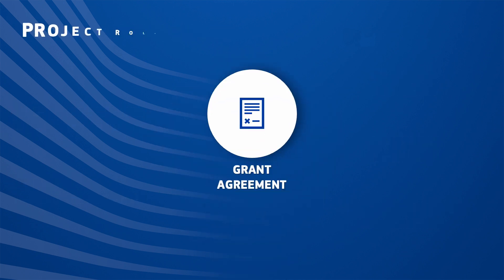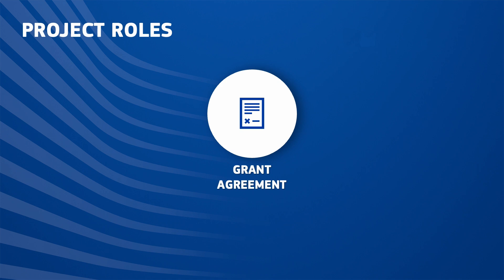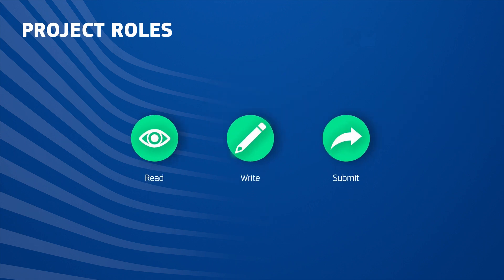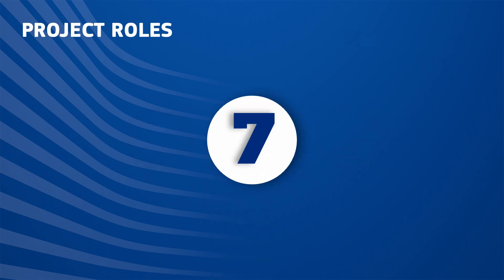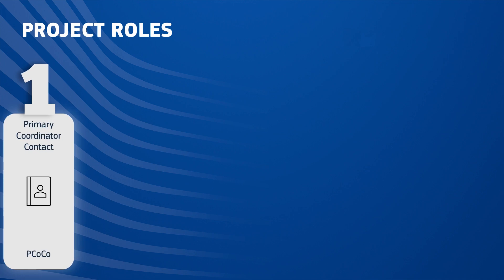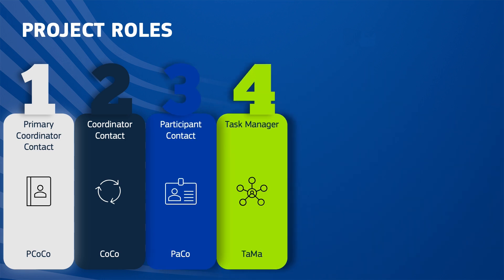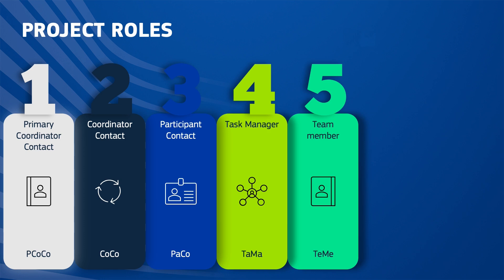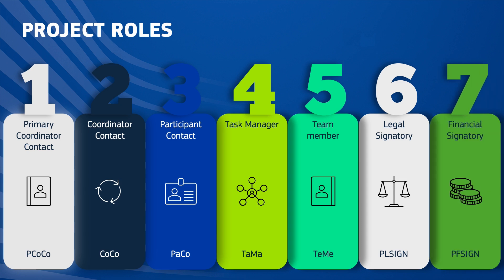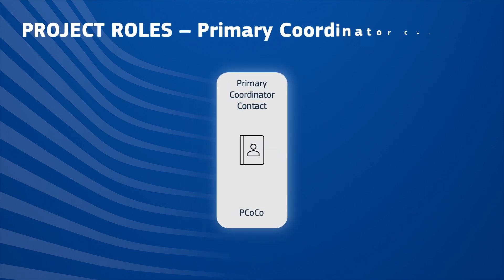The LEAR may delegate tasks to one or more Account Administrators. Both the LEAR and the Account Administrators can nominate the L-Sign and the F-Sign. Moreover, Account Administrators have the same rights as the LEAR. Project roles are considered when the proposal is successful and the grant agreement preparation has started. Individual access — read, write and submit — is defined for each project. There are seven roles at this level: the Primary Coordinator Contact, the Coordinator Contact, the Participant Contact, the Task Manager, the Team Member, the Legal Signatory assigned to a project, and the Financial Signatory assigned to a project.